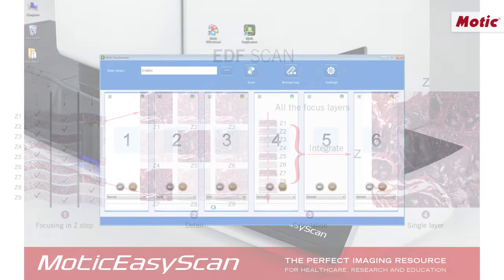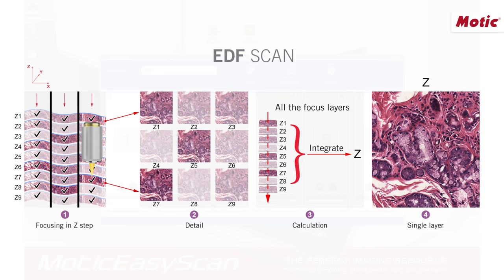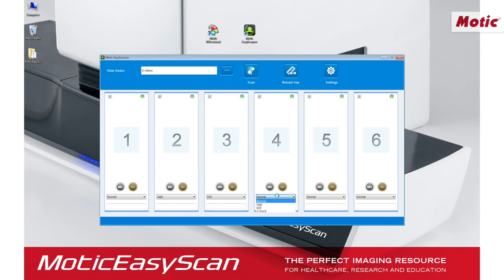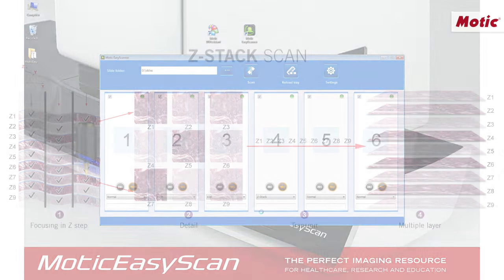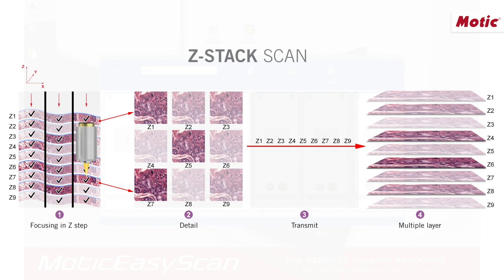Then we have EDF, extension depth of field. On this option, the system goes through several focal planes as previously, but in this case the different captures are combined into a unique image. Finally, we have the Z-Stack mode. This mode uses several focal planes as well, but in this case no further combination occurs, which means we will have a digital file that gives us image information about the different layers.